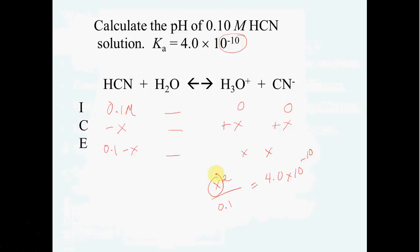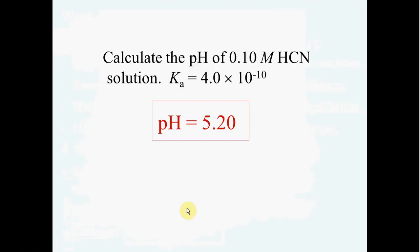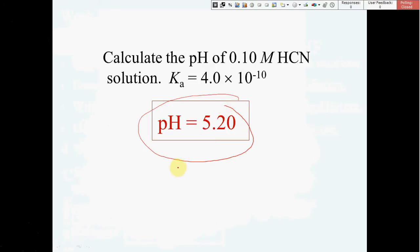When you find x, it will be equal to the hydronium ion. And then you can take the negative log of that. Go ahead and try that problem yourself and make sure you can come up with a pH of 5.2.